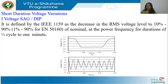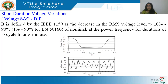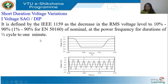Short duration voltage variations begin with voltage sag — IEEE uses 'sag' while IEC uses 'dip,' but both mean the same thing. The IEEE 1159 standard describes a sag as a decrease in RMS voltage to between 10 to 90 percent (0.1 to 0.9 per unit). The European standard EN 50160 describes it as 1% to 90%.